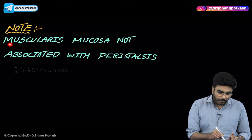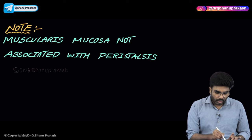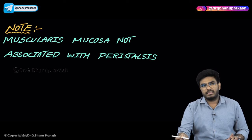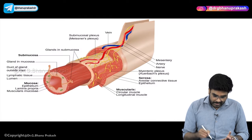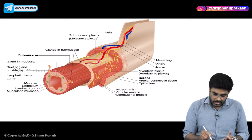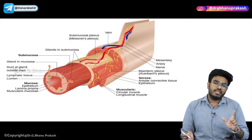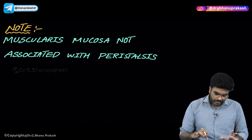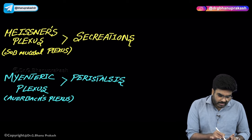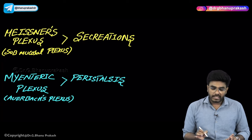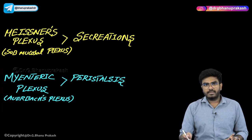Never forget: muscularis mucosae is not associated with peristalsis. Muscularis propria - this muscular layer which includes the circular muscles and longitudinal muscles - helps in GI motility. Meissner's plexus or submucosal plexus helps in GI secretions. Myenteric plexus or Auerbach's plexus helps in GI peristalsis.